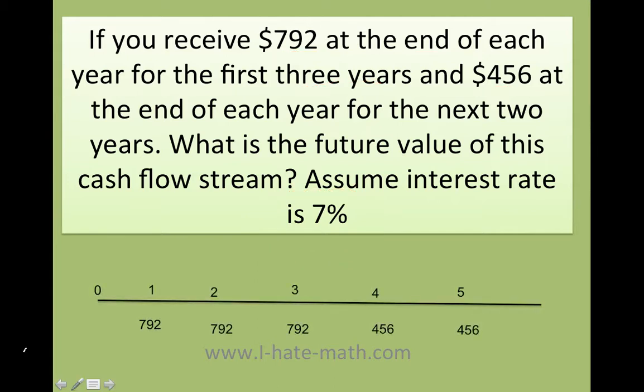The first step is to do the number line so I can figure out where I am, how many years and all that. Look, in year one I get $792, that happens on year two and on year three. Then on year four and five I get a different cash flow.